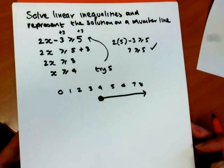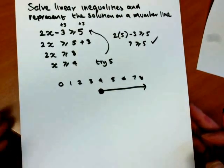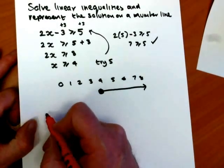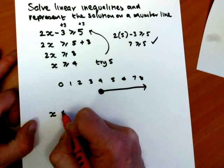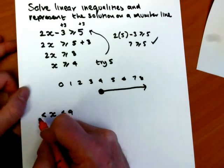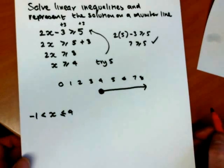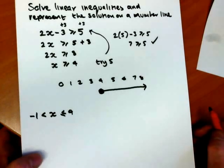So we have solved the linear inequality and we've represented the solution on a number line. Now let's go on to something else similar. We might be told that x is less than or equal to 4, greater than or equal to, sorry, greater than minus 1. We're asked then to write down all the solutions and represent this on a number line.